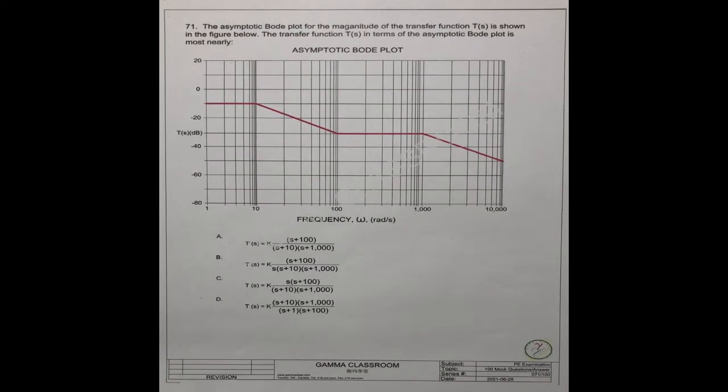Question No. 71. The asymptotic Bode plot for the magnitude of the transfer function T(s) is shown in the figure below. The transfer function T(s) in terms of the asymptotic Bode Plot is most nearly what number? They have the ABCD four answers.